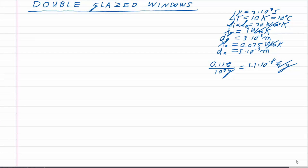Moving on to question 1: the heat transfer coefficient of a single glass plate. I'll start with a drawing of a glass plate with air on both sides. The air has a heat transfer coefficient on the outside and on the inside, and the glass has a thickness D_G and thermal conductivity lambda_G.